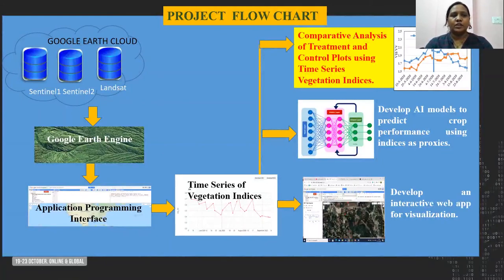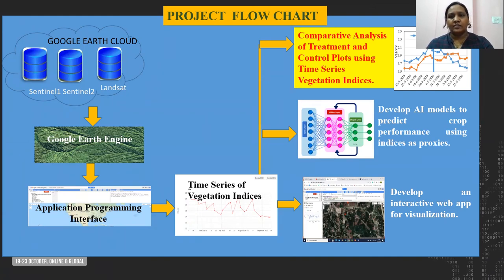In this project, we accessed open source satellite data from Google Cloud using Google Earth Engine and developed time series of vegetation indices using APIs. Using these indices, we conducted a comparative analysis between treatment and control plots and performed ANOVA analysis. Another objective is to develop AI models to predict crop parameters using these indices as proxies — the spectral and backscatter indices will be used as such. We are also developing an interactive Google Earth Engine-based web app for visualization of images and time series data.